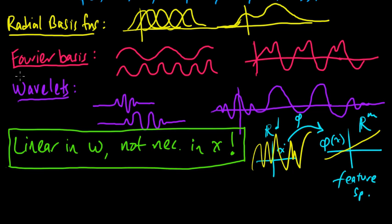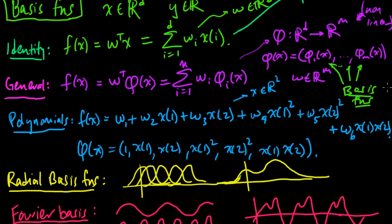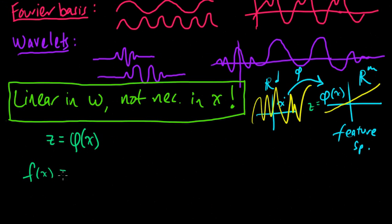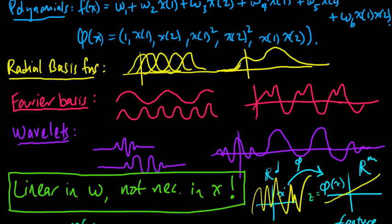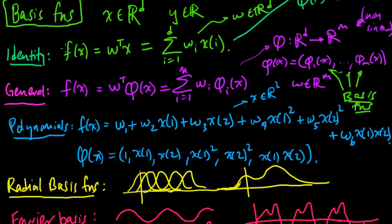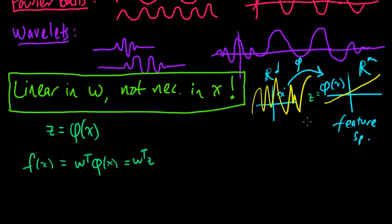We had our original x, and we took phi of x. Let's call that z. So z is this thing over here, and then our function is this dot product with w. So f of x, if we just plug this in, is the dot product w^T z. This is the same as w^T x except we've replaced x with z.